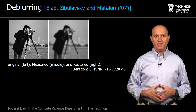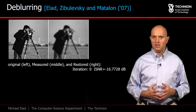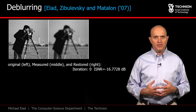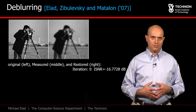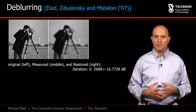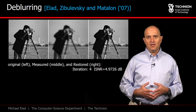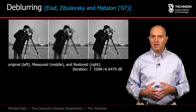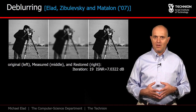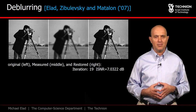Image de-blurring is another fundamental problem in image processing. In this task, we are given a blurry and noisy image. We know the blur kernel, and our goal is to stably invert the degradation effect. An iterative algorithm is used here, initialized with a zero image. After a few iterations, the result is getting very clear and very sharp. These results were obtained in a joint work with Boaz Matalon and Michael Tzebulewski.